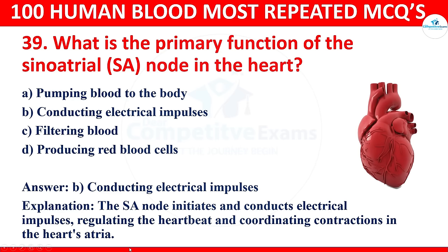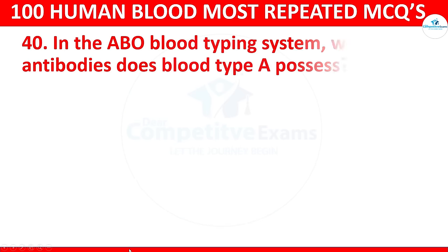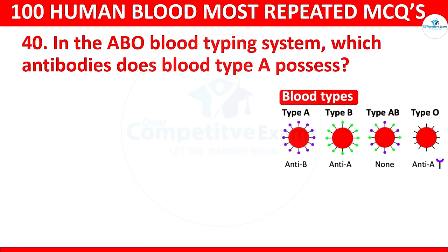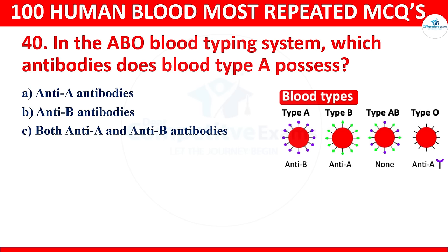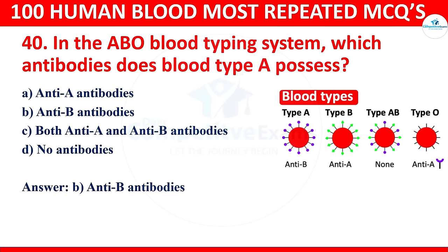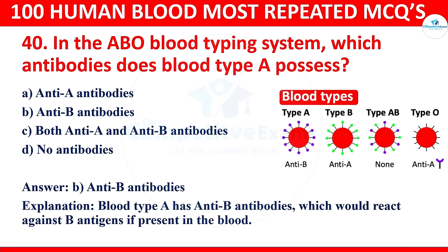Question 40: In the ABO blood typing system, which antibodies does blood type A possess? Options: anti-A antibodies, anti-B antibodies, both anti-A and anti-B antibodies, or no antibodies. The correct answer is anti-B antibodies. Blood type A has anti-B antibodies, which would react against B antigens if present in the blood.